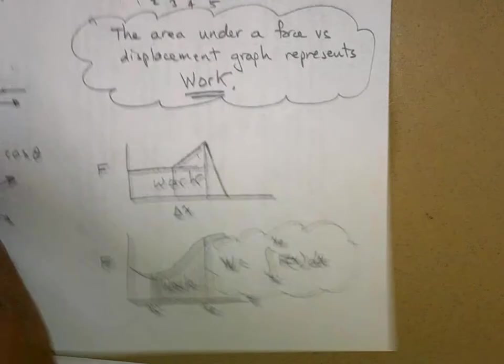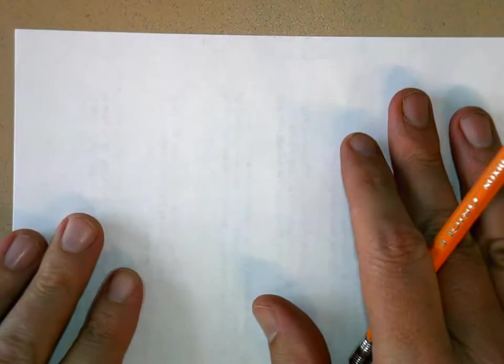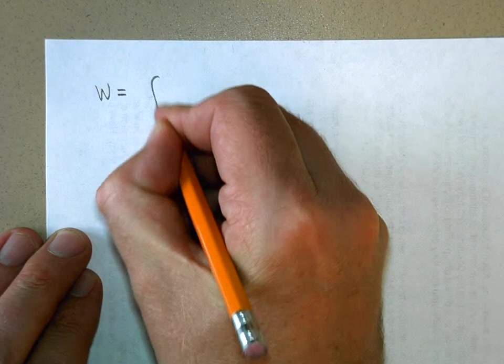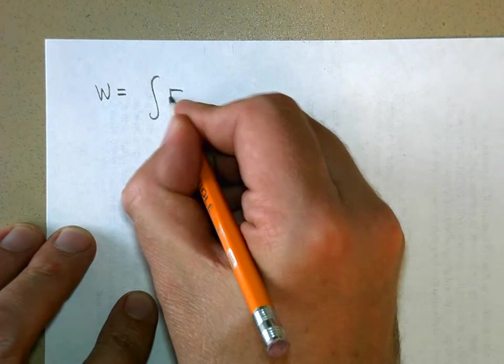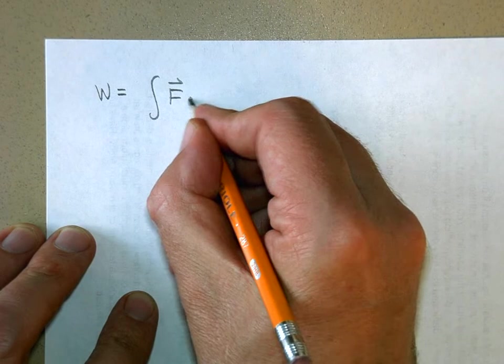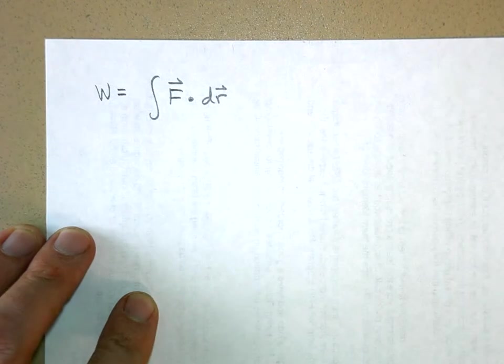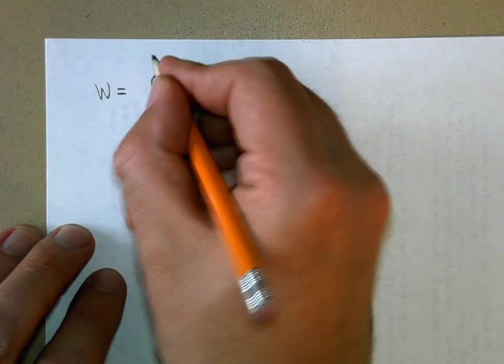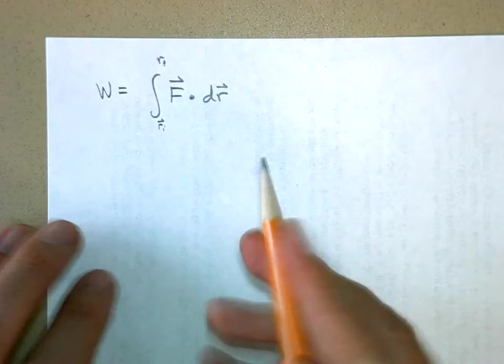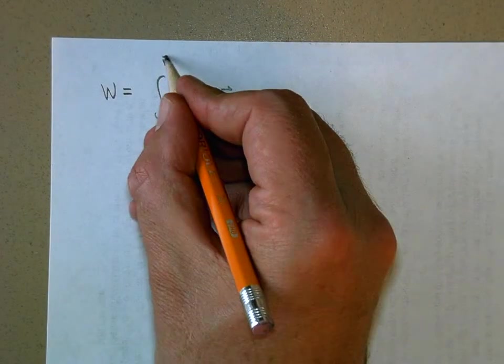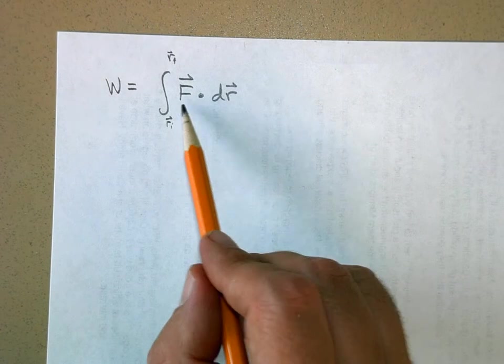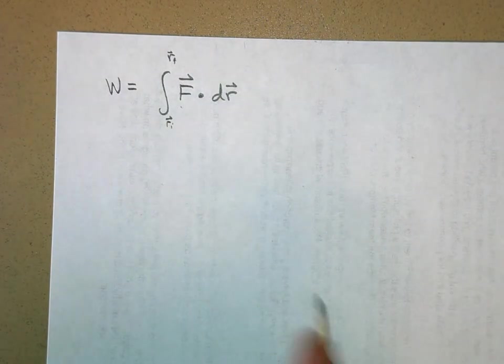We can say, on a new piece of paper, that work is equal to the integral of F dot dr. This is the most general form. We have to have our initial and our final. But this is a definition for work in three-dimensional space. It's force times displacements and adding them all up, and of course you got this dot product thing to worry about.